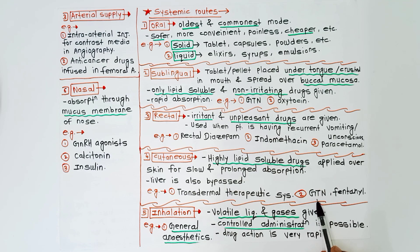Next route is inhalation. By this route, volatile liquids and gases are given. There is controlled administration possible in this route, and drug action is very rapid. Example is general anesthetics are given by this route.